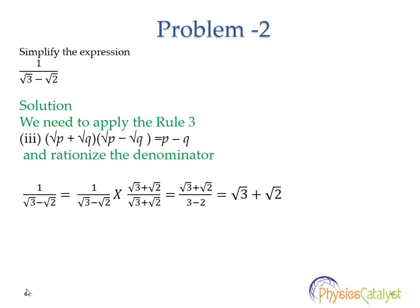We need to apply rule 3, which says that root P plus root Q multiplied by root P minus root Q is equal to P minus Q. And we have to rationalize the denominator.